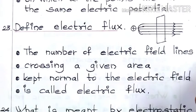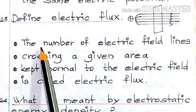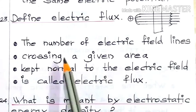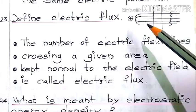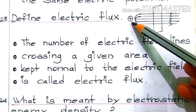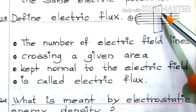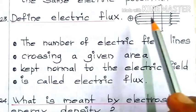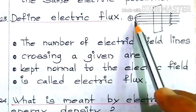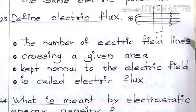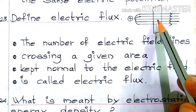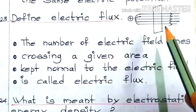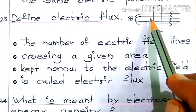Next question: Define electric flux. Electric flux — the number of electric field lines crossing a given area kept normal to the electric field is called electric flux. In the diagram, a positive charge is shown from which electric field lines emanate. These parallel lines represent the electric field lines coming out of the positive charge. When an area or surface is placed perpendicular to the electric field lines, the number of field lines crossing that area is called electric flux.